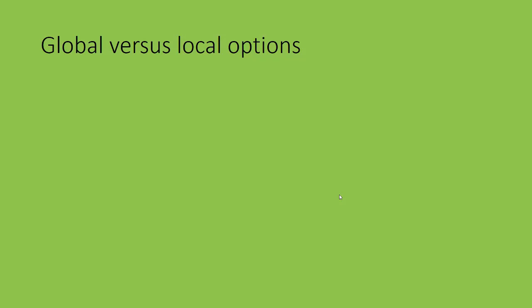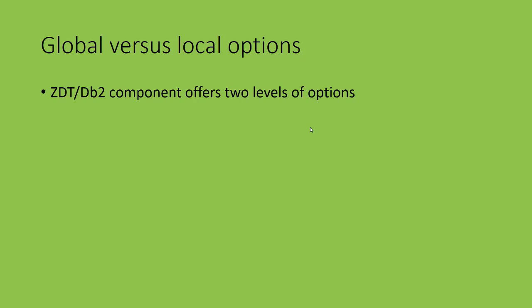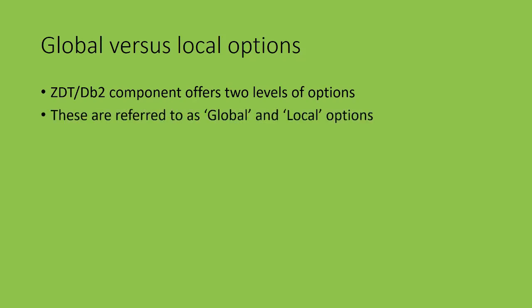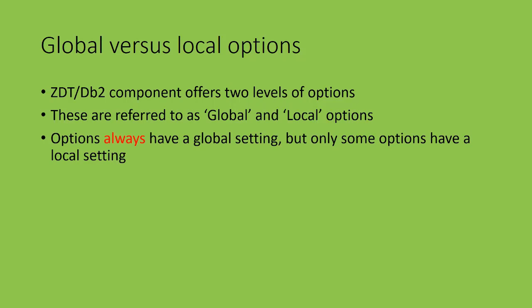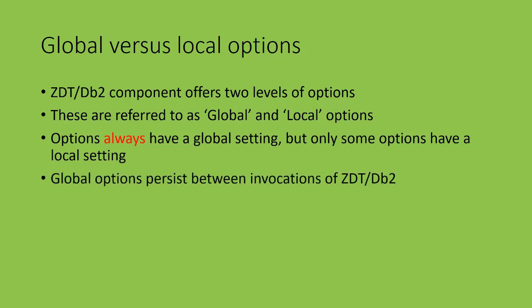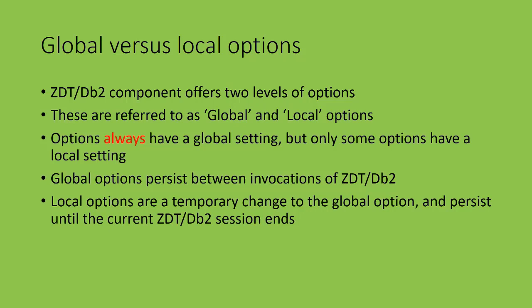The fourth topic is the discussion of global and local options. ZDataTools DB2 Component offers two levels of options, referred to as global and local options. There is always a global setting for an option; however, only some options have a local setting. Global settings are saved in the user's ISPF profile and persist between invocations of ZDataTools DB2 Component. Local options are a temporary change to the corresponding global option — a change to the local option persists until the current function ends or the user exits ZDataTools DB2 Component.